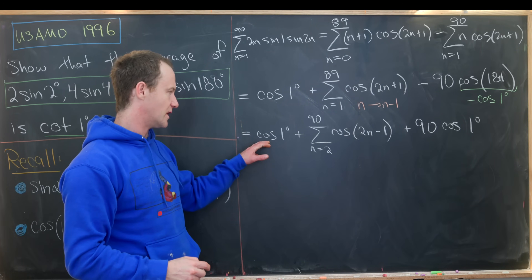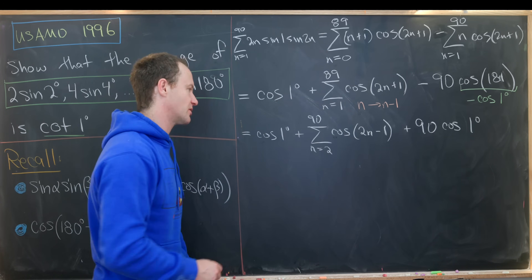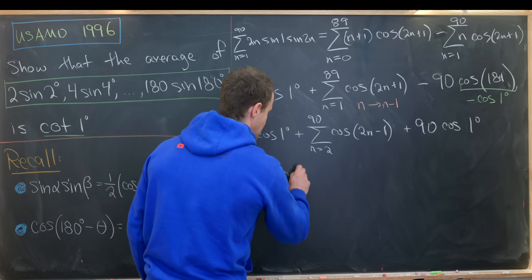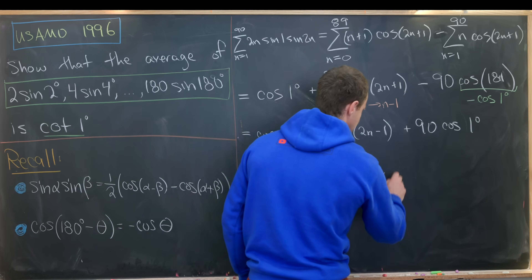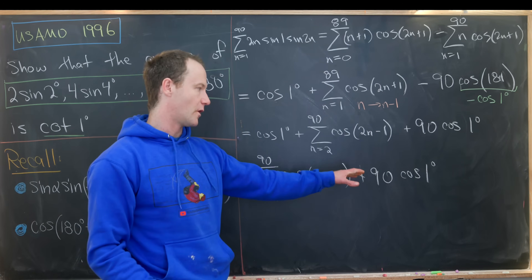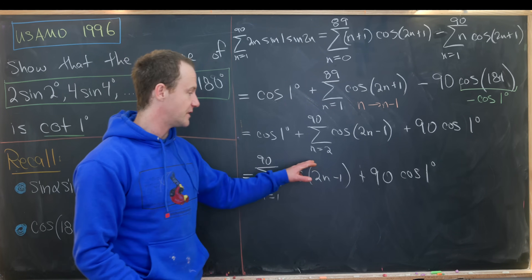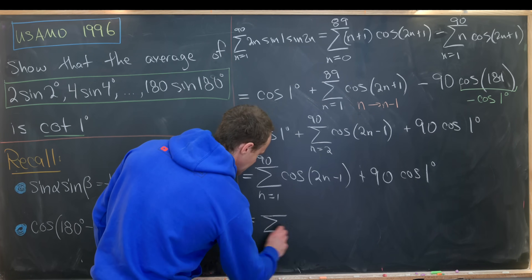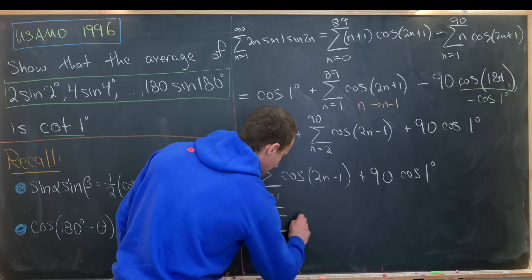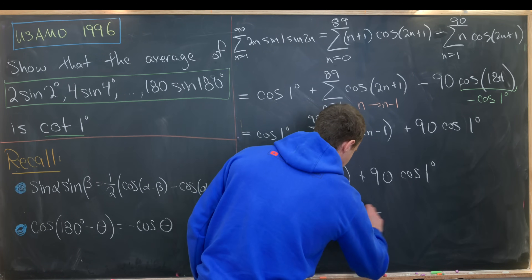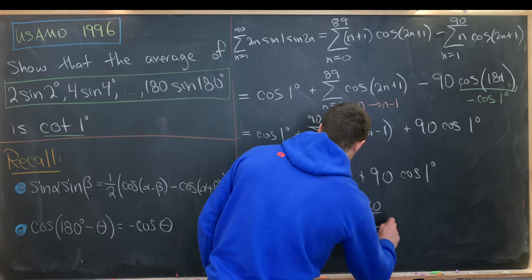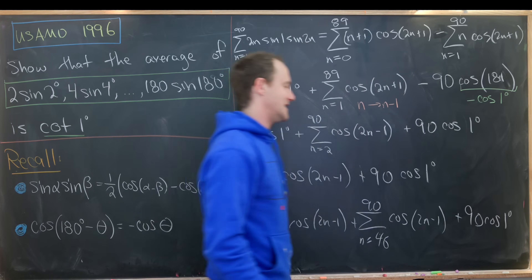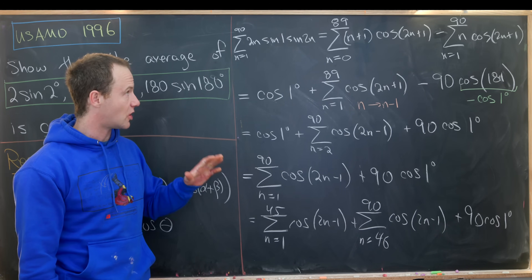We can take that cosine of one degree and recognize it as the first term of the sum, giving us the sum as n goes from one to 90 of cosine of two n minus one, plus 90 times cosine of one degree. Since we want the whole thing to equal 90 times cosine of one degree, we need to show this sum equals zero. We split it into the sum from n equals one to 45, plus the sum from n equals 46 to 90, of cosine of two n minus one.